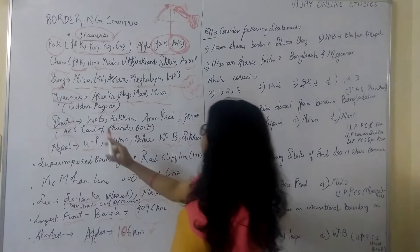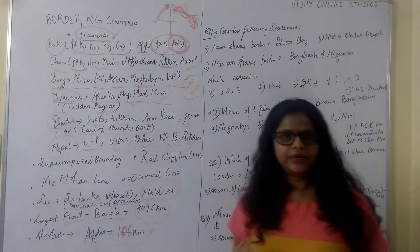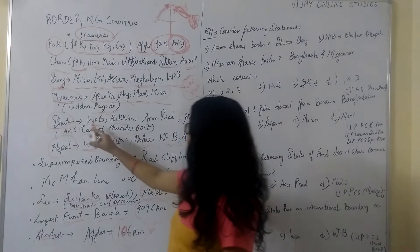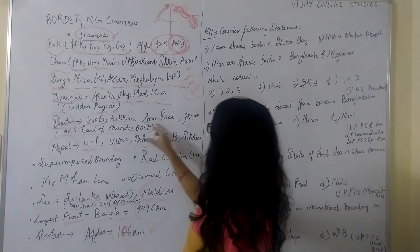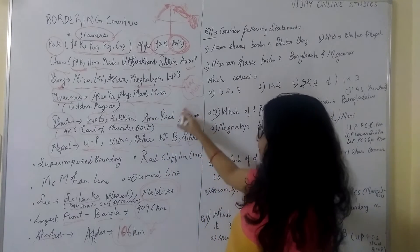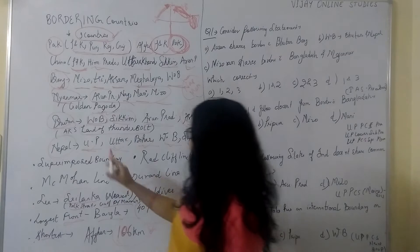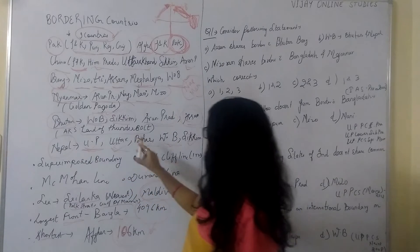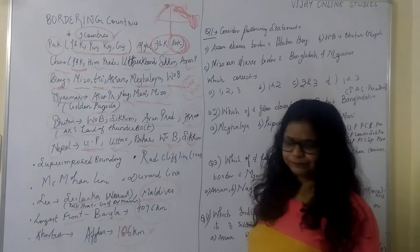Then Bhutan, also known as the Land of Thunderbolt. It borders West Bengal, Sikkim, Arunachal Pradesh and Assam. Then comes Nepal. Nepal is touching Uttar Pradesh, Uttarakhand, Bihar, West Bengal and Sikkim.